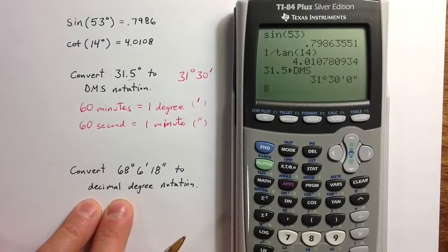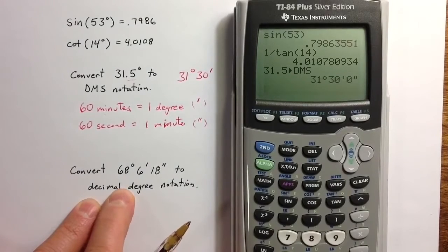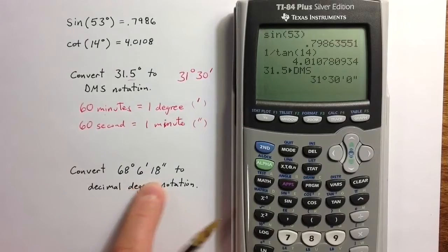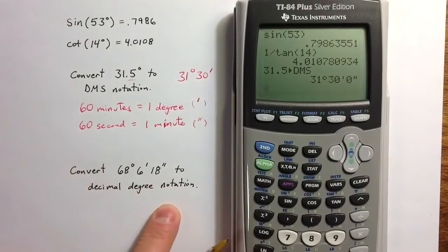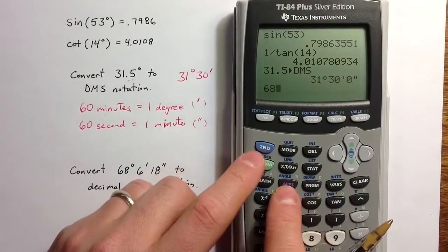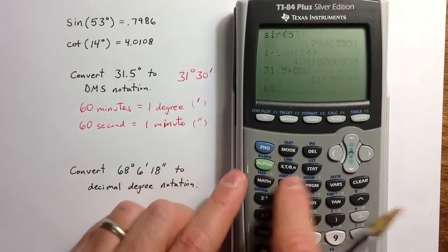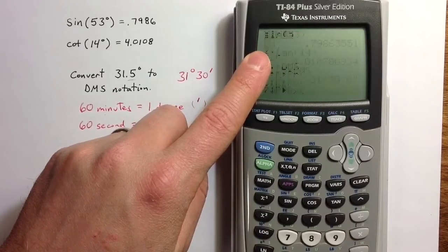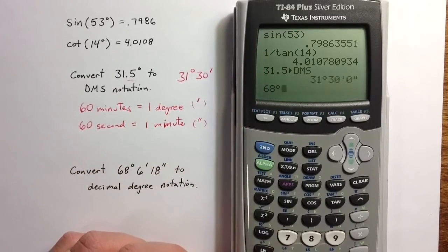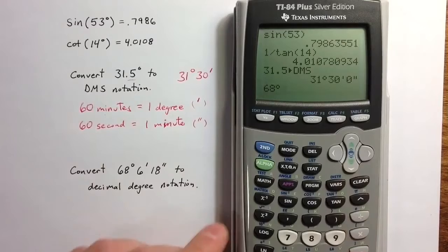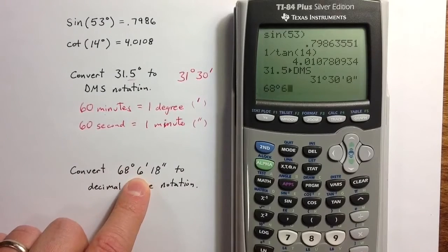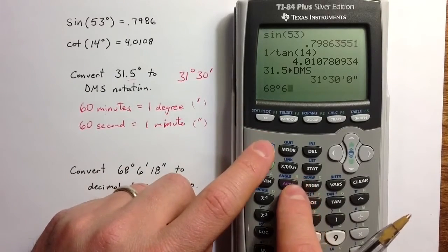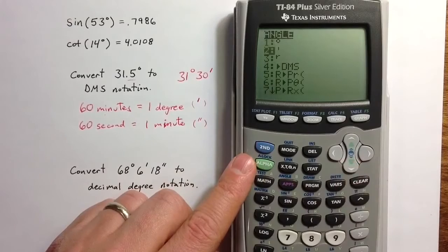To convert the other way, let's say we want to convert 68 degrees 6 minutes and 18 seconds into decimal degree notation. There are two ways to do that. Again, going to the angle menu, we can explicitly identify the 68 as 68 degrees. We can identify the 6 as 6 minutes, option 2.